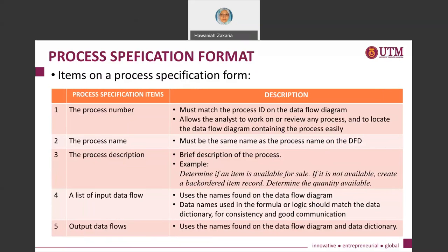The first item is the process number. Process specification always relates to a particular process, and you identify a process through the number you give it. In your DFD, every process must be numbered. The process number in the process specification form must match the process ID on the data flow diagram, so analysts can locate the correct diagram containing that process number.